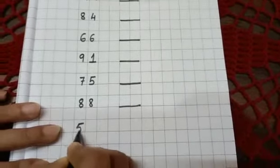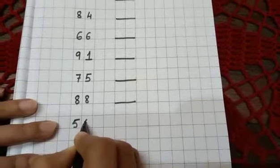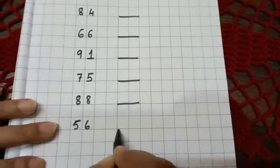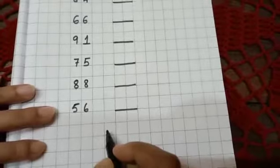Then five, six, fifty-six, dash, fifty-six. Next number.